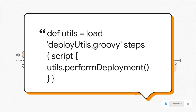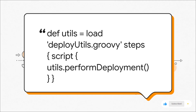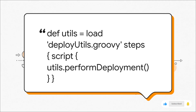Now look at the 'after' — it's beautiful. All that messy code is gone. Instead we have this one line at the top: 'def utils = load deploy-utils.groovy'. This pulls in another file from our repository. Now our entire Deploy stage is just a single simple function call: 'utils.performDeployment()'. All that complexity is now tucked away neatly in that other file. The Jenkinsfile itself is back to being simple and readable — you can see exactly what it's supposed to do without getting lost in the details.